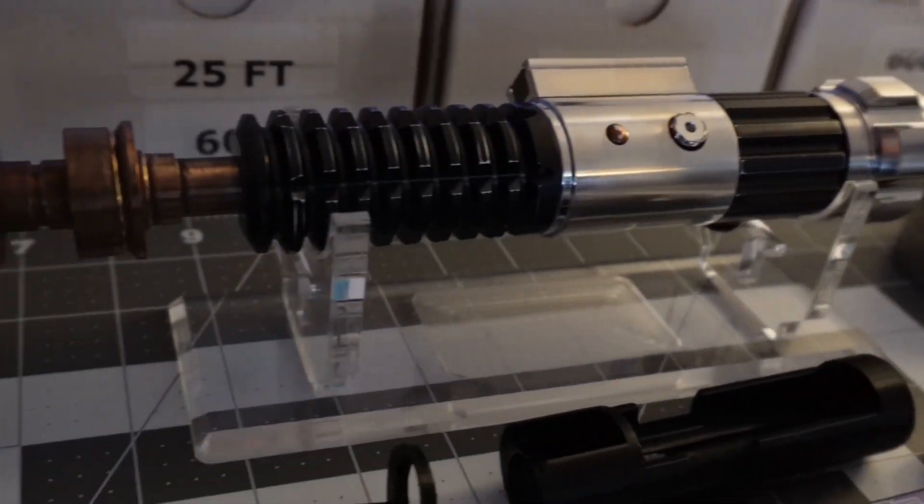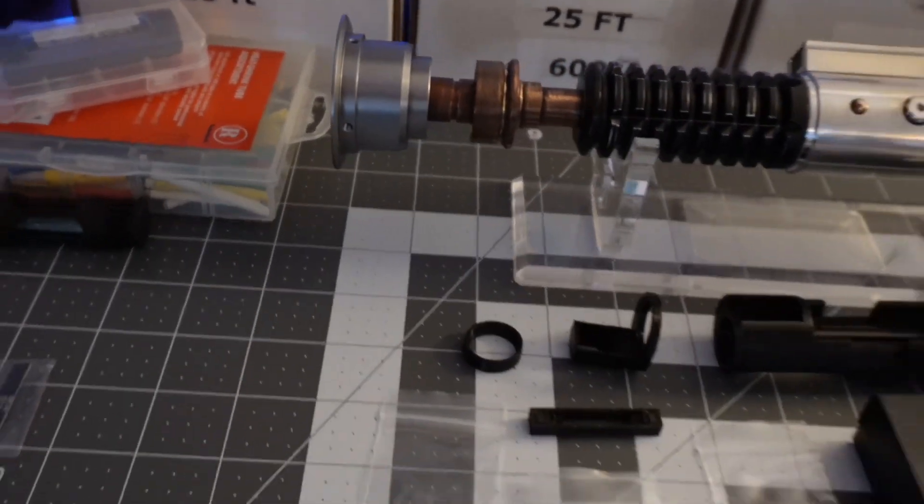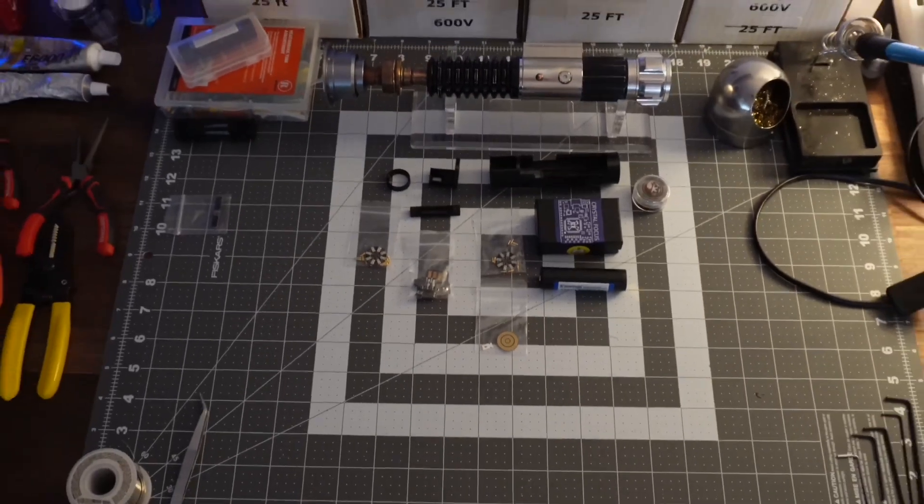Welcome back to another lightsaber build. This is TXQ's Obi-3.5, another take on the TV show Obi-Wan Hilt.